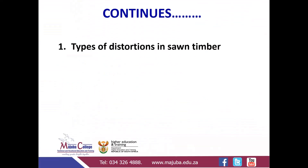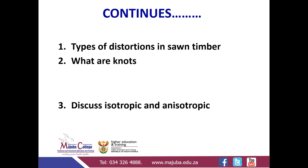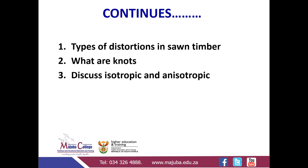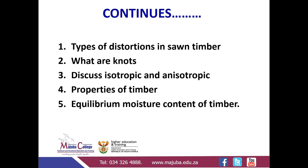Last time we said we're going to look at the types of distortion in timber, types of knots, we're going to discuss the isotropic and anisotropic behavior of material, we're going to discuss the properties of timber, and lastly the equilibrium moisture content of timber.